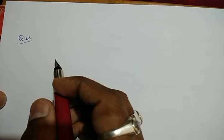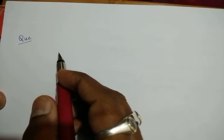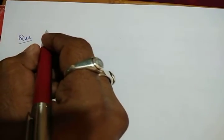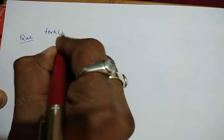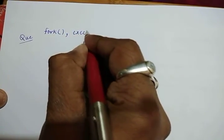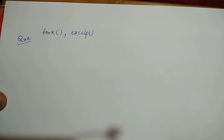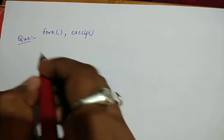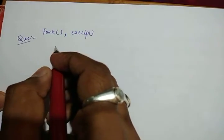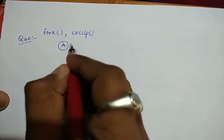Hello friends. In the last video lecture of operating system, we discussed the concept of process creation and we discussed the example of the Unix operating system. Two system calls were discussed: the fork system call and the execlp system call, which were used for the creation of a child process. At the end of that lecture we raised a question based on the concept of process hierarchy.